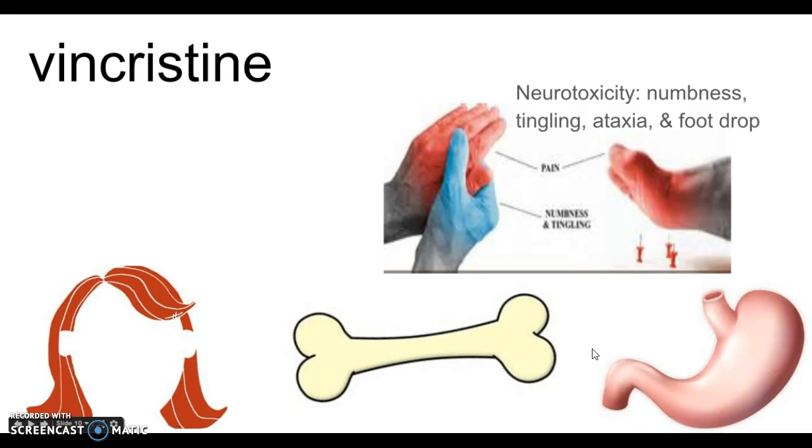An additional thing that happens with vincristine that differentiates it from other classes of chemotherapeutic agents is the neurotoxicity. I've listed some of the things that result from neurotoxicity: numbness, tingling, ataxia, foot drop, what we call neuropathy. You usually hear that word preceded by diabetic, like diabetic neuropathy, but we can also have neuropathy associated with vincristine. We're going to monitor for this neurotoxicity with vincristine that we really wouldn't see with some of the other chemotherapeutic agents.